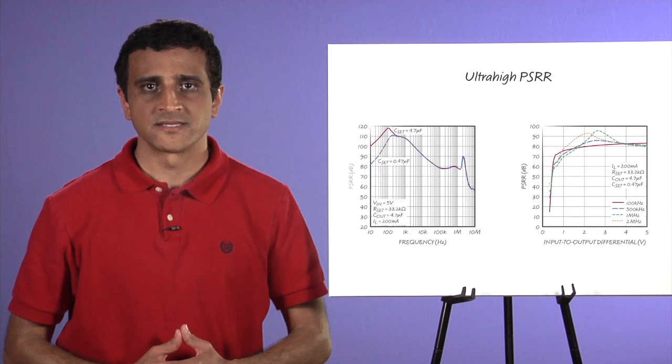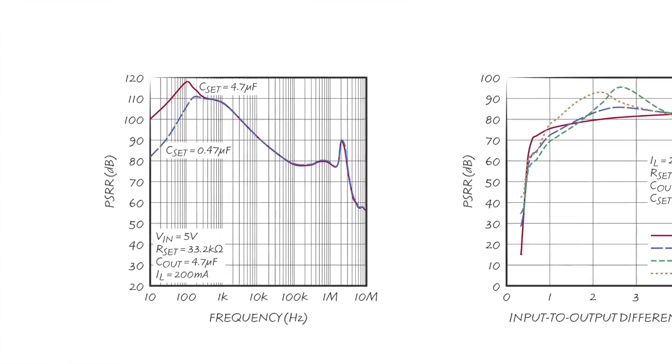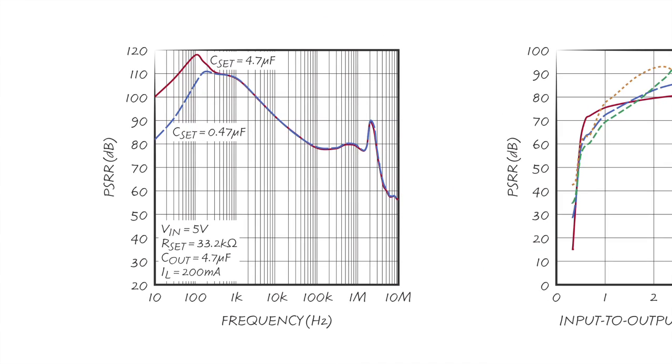Ultra-high PSR is another LT3042 advantage, offering incredible low- and high-frequency PSR performance. PSR approaches 120 dB at 120 Hz, 79 dB at 8 MHz, and better than 70 dB all the way out to 3 MHz.